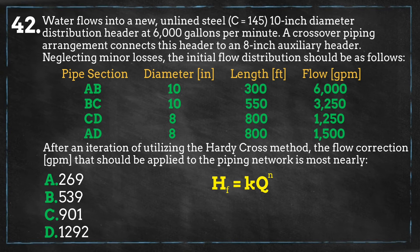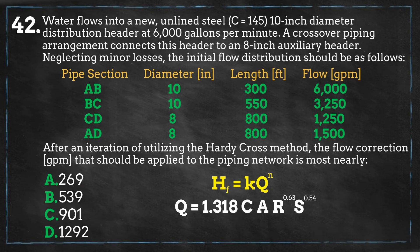Over the past few episodes, we have used multiple equations to correlate head loss, flow, and pipe dimensions. For this problem, let's use the Hazen-Williams equation from episode 38. The Hazen-Williams equation gives q as the flow rate in cubic feet per second, c as the Hazen-Williams roughness coefficient, a as the cross-sectional area of the pipe, and s as the slope of the pipe. Realizing that the wetted perimeter r for a circular pipe is one-fourth of the diameter, and that our flow rate is in gallons per minute, we can simplify the equation.